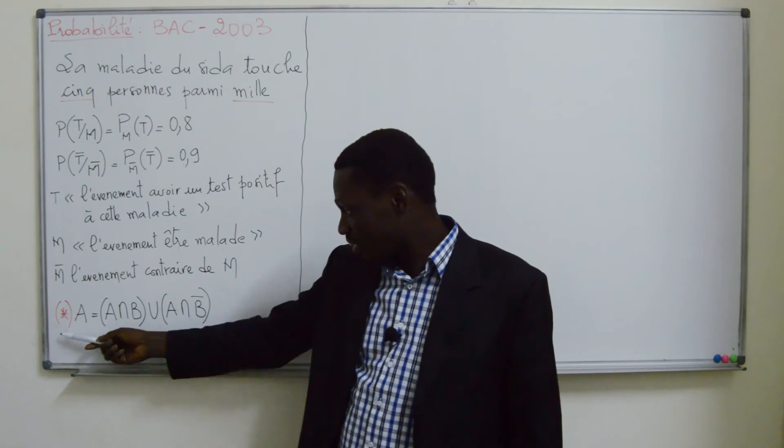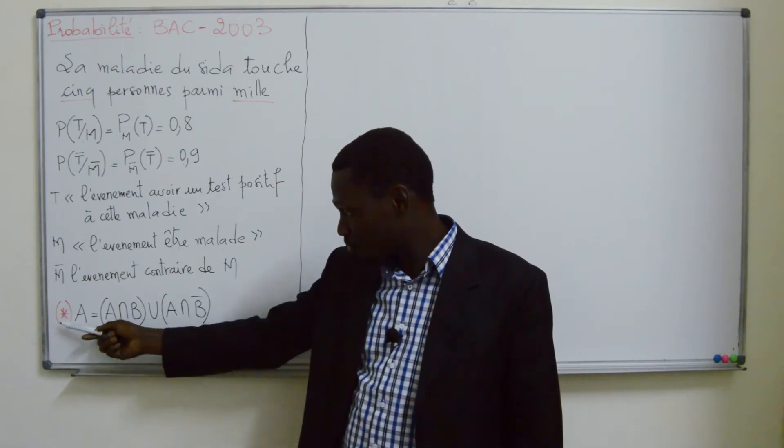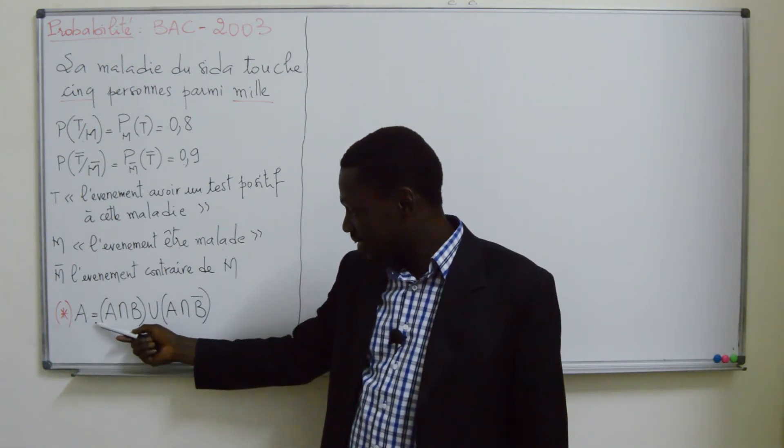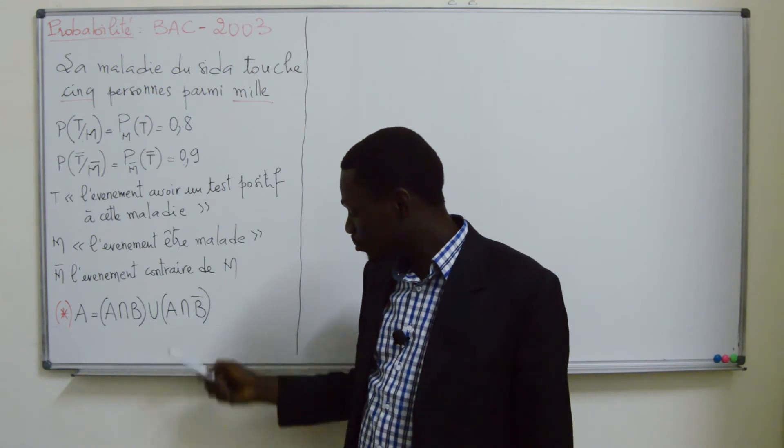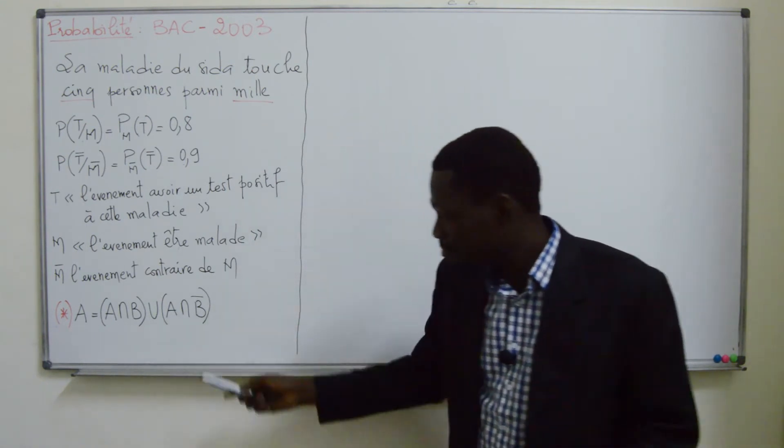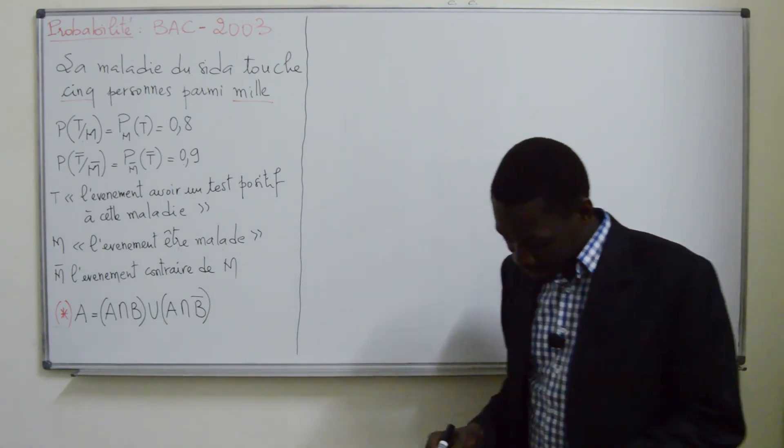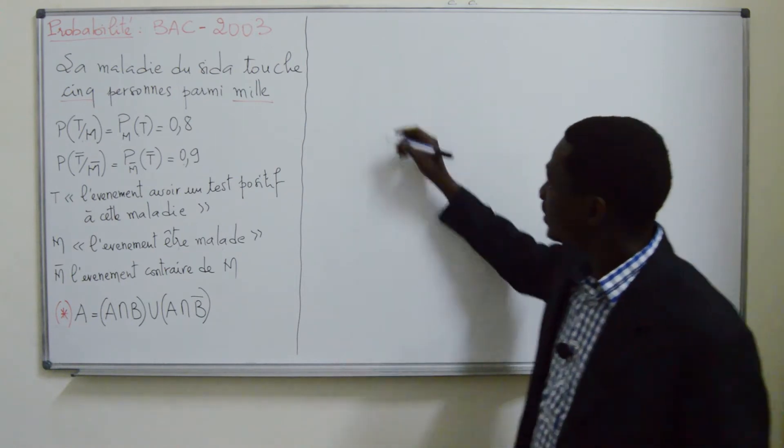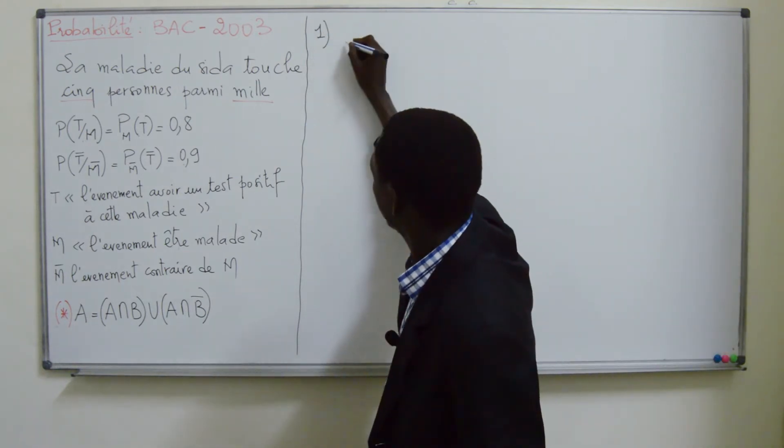On considère la relation suivante: A = (A∩B) ∪ (A∩B̄). On nous dit, à la question 1 petit a, de réécrire cette relation pour A = T et B = M.